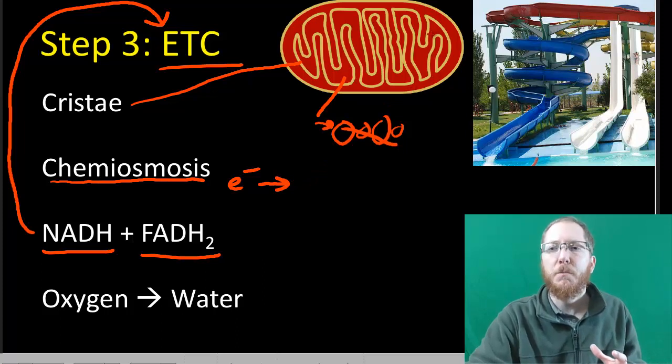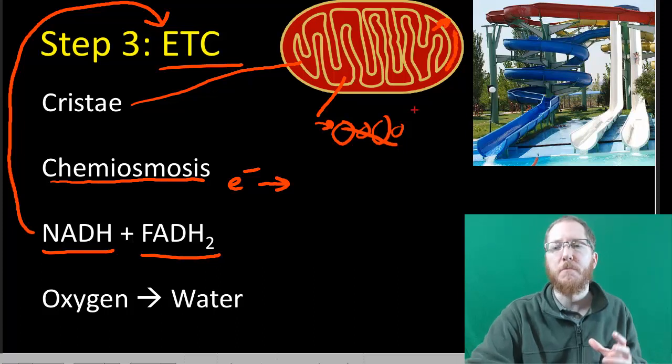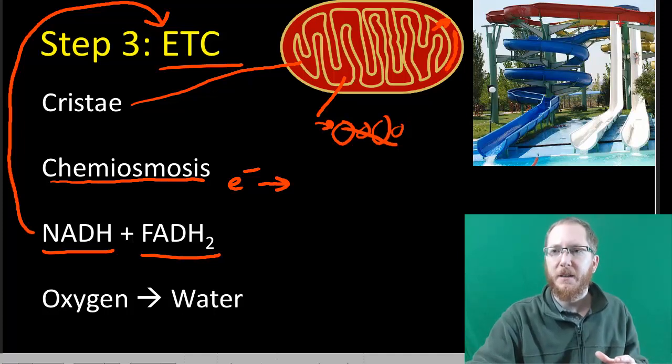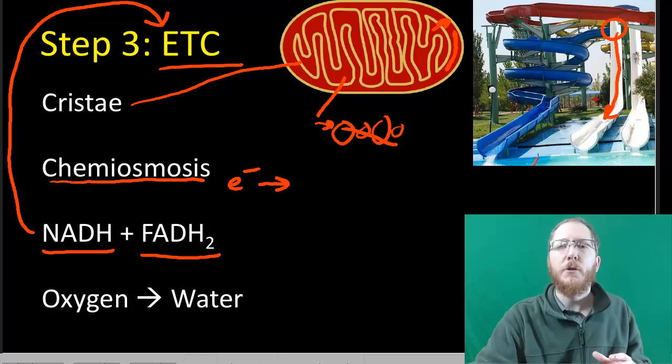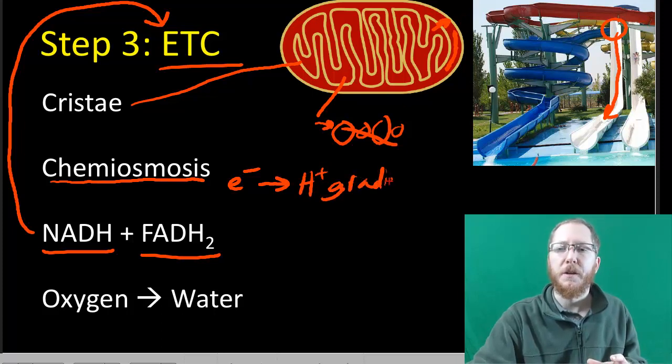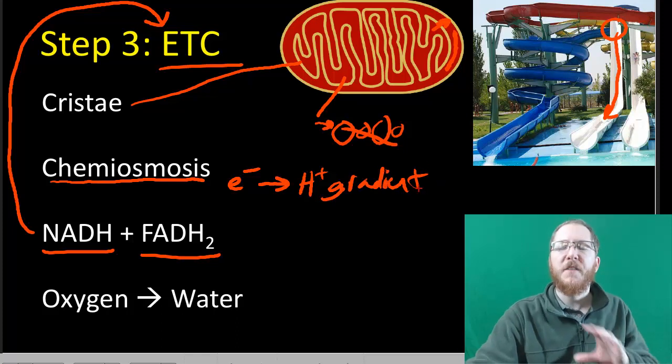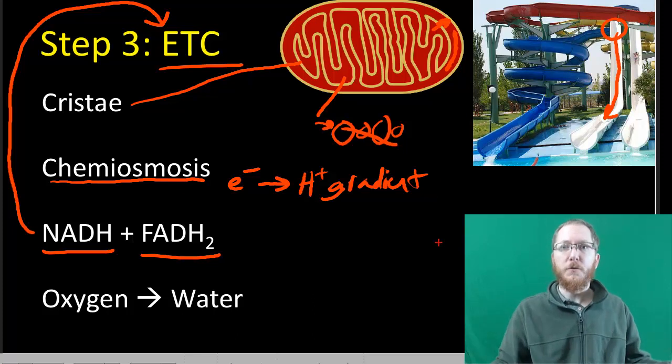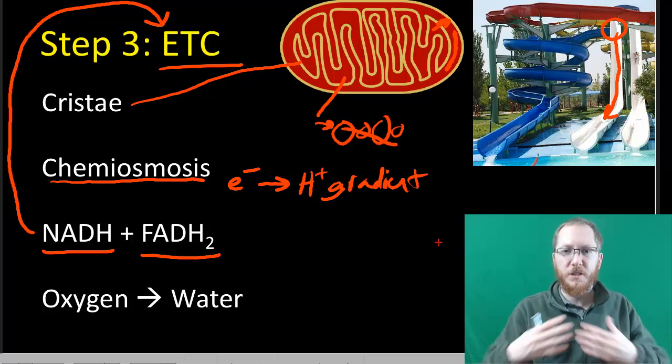The electrons have energy, and as they go down these electron transport chain proteins, each protein releases some and will pump H+ out. The H+ is pumped from the matrix into this intermembrane space between the two membranes. By using the energy from the electrons, they're able to pump these H+ to make an H+ gradient just like we had during photosynthesis.